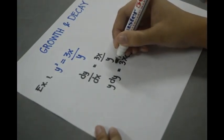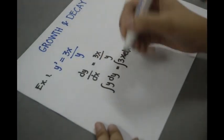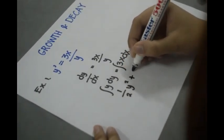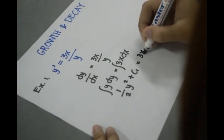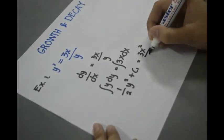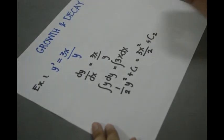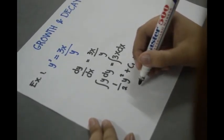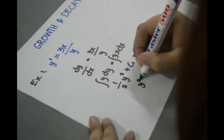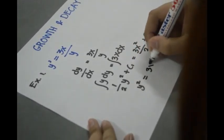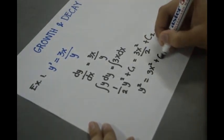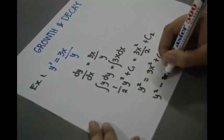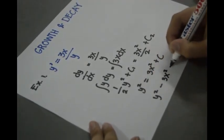Then we will integrate. One half y squared plus c1 is equal to 3x squared plus c2. It is not necessary to add constants to both sides. So y squared is equal to 3x squared, and we obtain a general form of y squared minus 3x squared is equal to c.